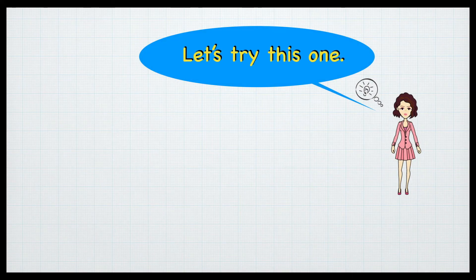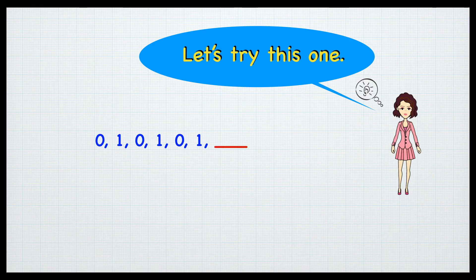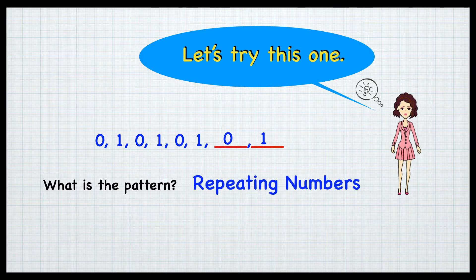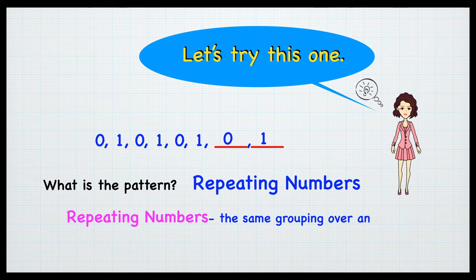Let's try this one. 0, 1, 0, 1, 0, 1, 0, 1. What is the pattern? Repeating numbers — the same grouping over and over again. The pattern never changes.